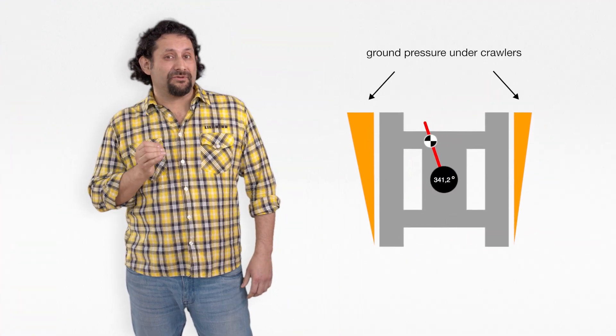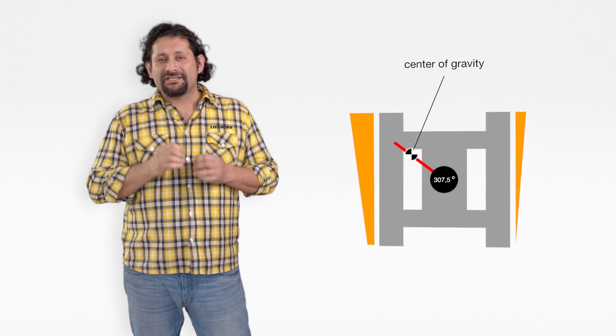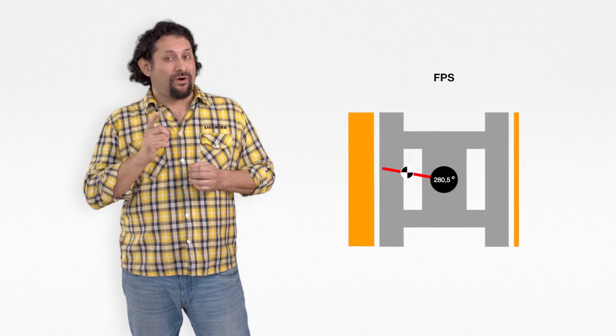The system can also display the ground pressure distribution under the crawlers, as well as the center of gravity for every position and load change, considering EN standard or FPS.